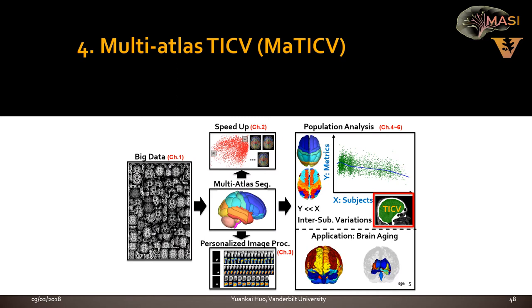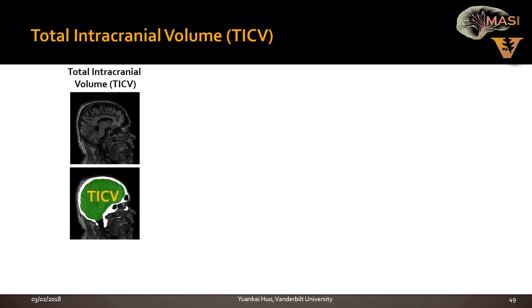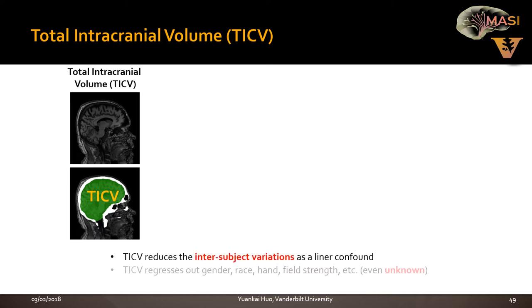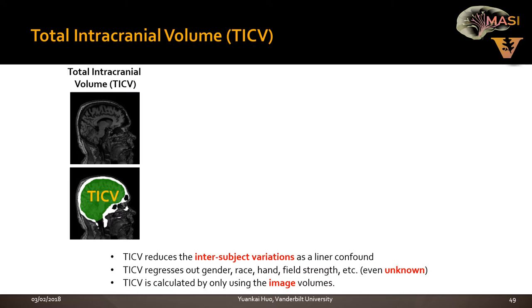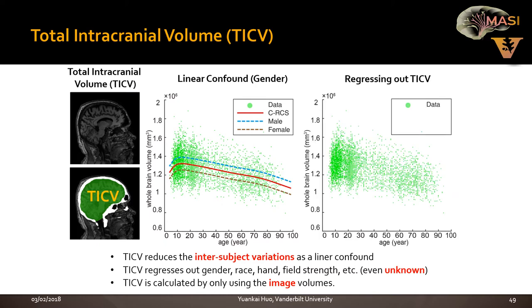We tested on a 200-subject elderly population cohort and found 11 patients with inconsistent segmentation where at least one method failed. Visualizing all 11 subjects, we can see all failures are from either CRUISE or FreeSurfer, while MaCRUISE is very consistent. We also evaluated surface parcellation, achieving high reproducibility on the inner, central, outer, and cortical surfaces. Moving on: for the X dimension correction, we use TICV — total intracranial volume — which is widely used in neuroscience as a covariate to reduce inter-subject variation. After TICV correction, systematic gender differences in whole brain volume almost disappear.